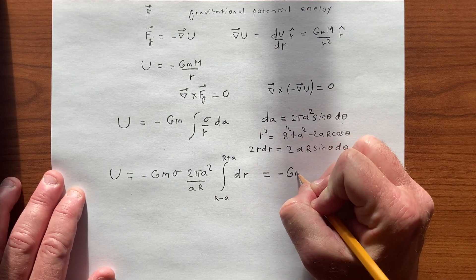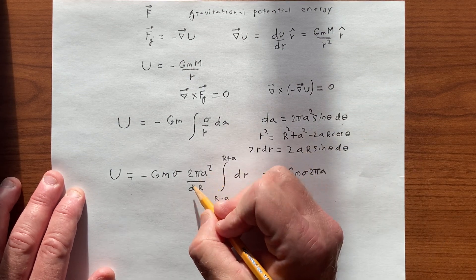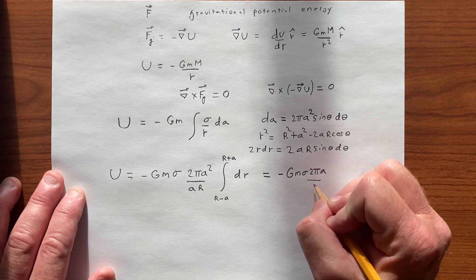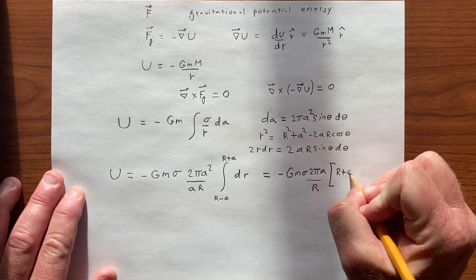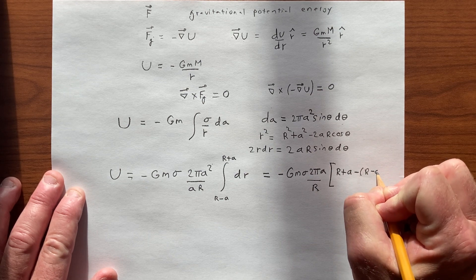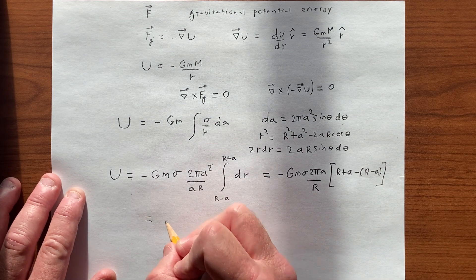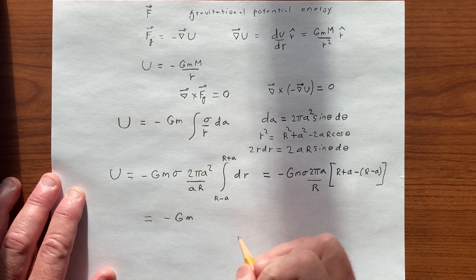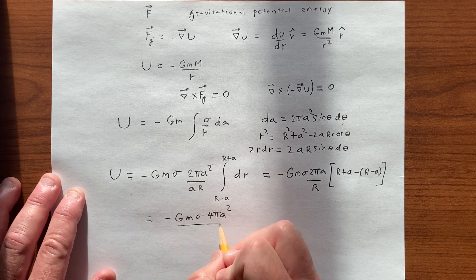We get minus G little m sigma 2 pi A, A squared and A. We have a factor of A there. We're dividing by r. And we're going from, we end up R plus A minus R minus A, and this gives us minus G little m sigma 4 pi A squared over big R,